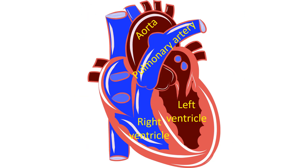The right ventricle is the right lower chamber of the heart, which pumps blood to the lungs for oxygenation. The pulmonary artery is the blood vessel which takes blood to the lungs from the right ventricle. The aorta is the large blood vessel which carries oxygenated blood to the whole body from the left ventricle. The left ventricle is the lower left chamber of the heart.